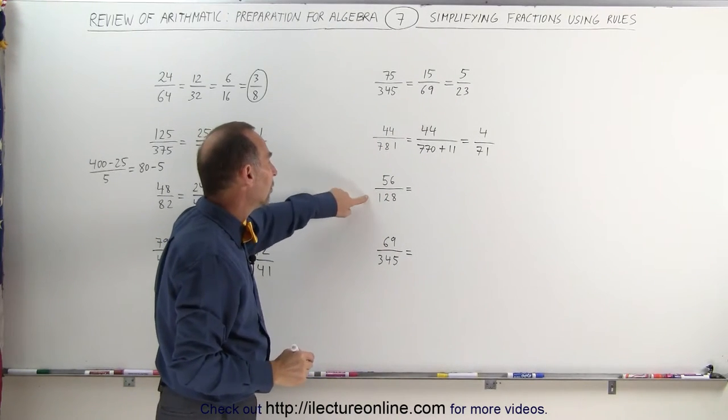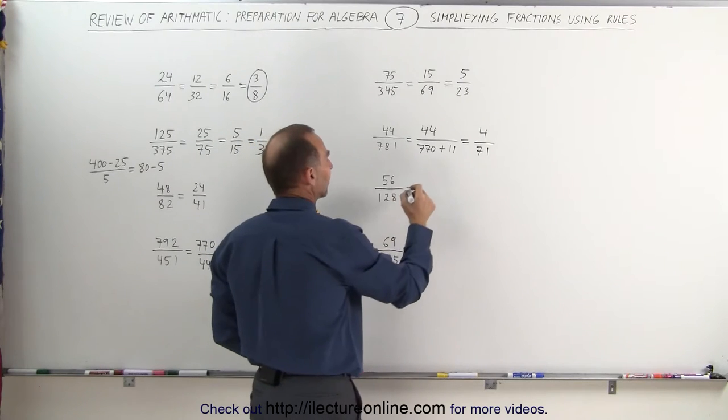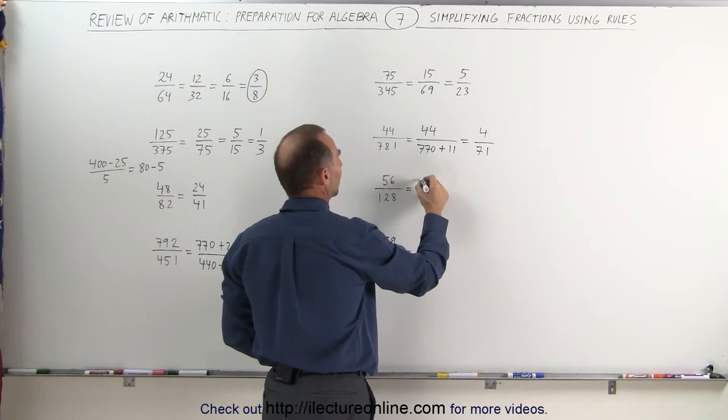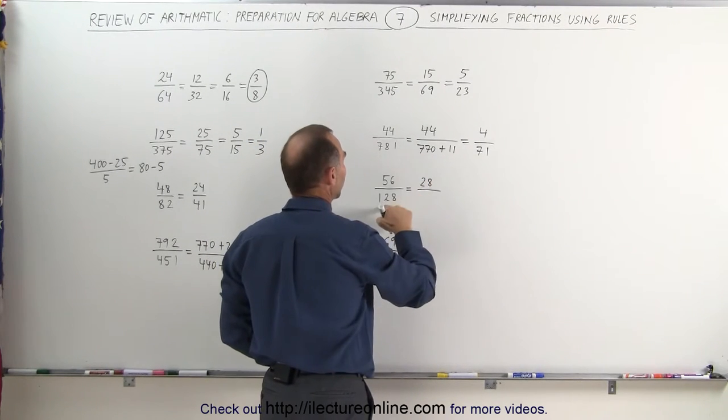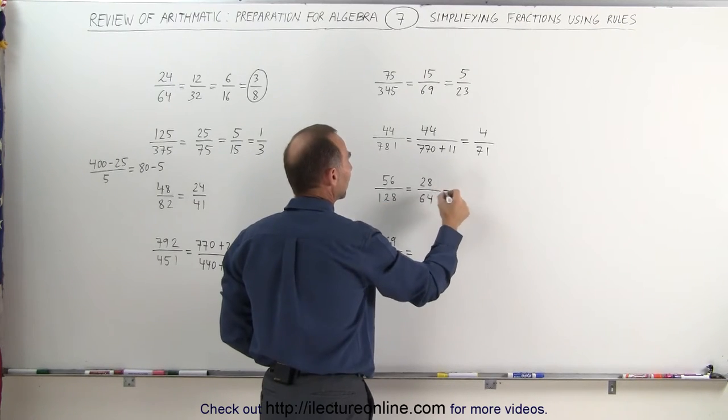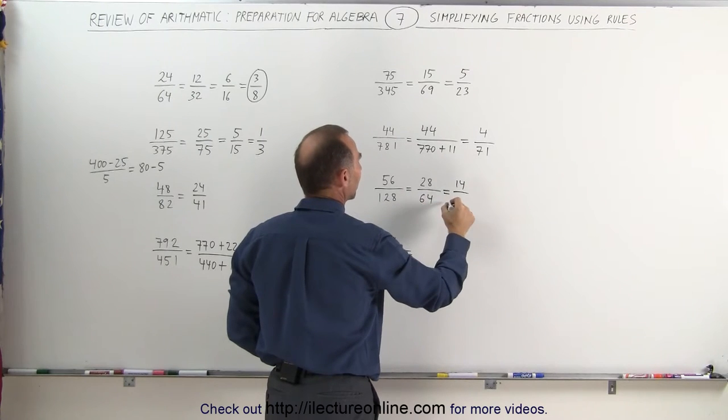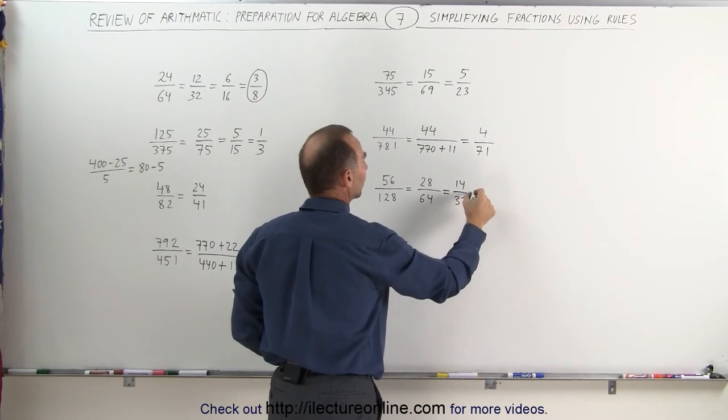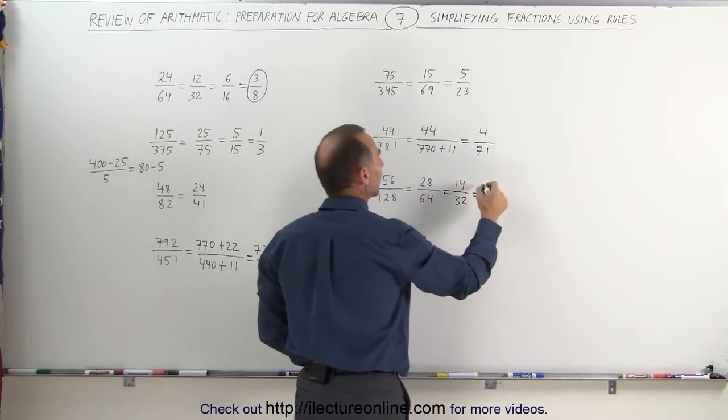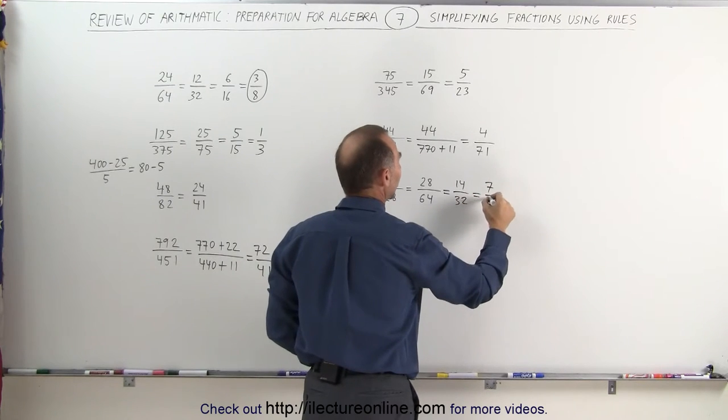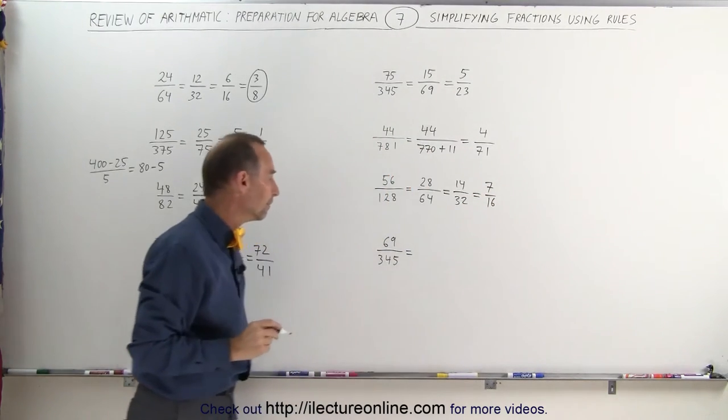Here I can see that both of these numbers are even. I can divide by 2. 56 divided by 2 is 28, and 128 divided by 2 is 64. They're still even. 28 divided by 2 is 14, 64 divided by 2 is equal to 32. They're still even. 14 divided by 2 is 7, 32 divided by 2 is 16, and that's as low as I can go.